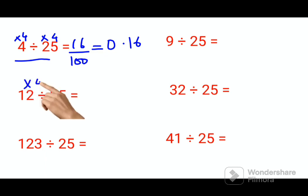So here we will again multiply by 4. So we will have 48. And then two digits from your right we will have the decimal, so 0.48 is your answer.